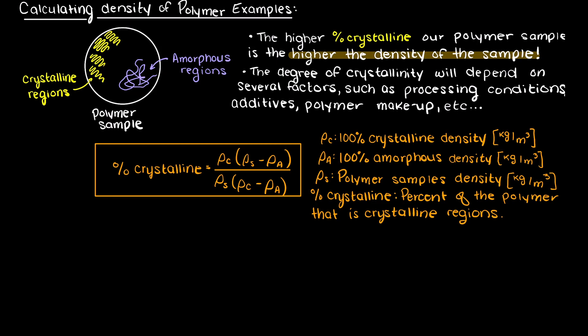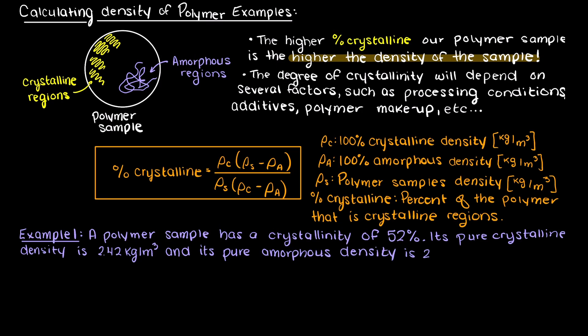We are given a polymer sample which has a crystallinity of 52%. In its pure crystalline form, this polymer has a density of 2.42 kg per meter cubed, and in its pure amorphous form it has a density of 2.25 kg per meter cubed, and we are told to find the true density of this sample.